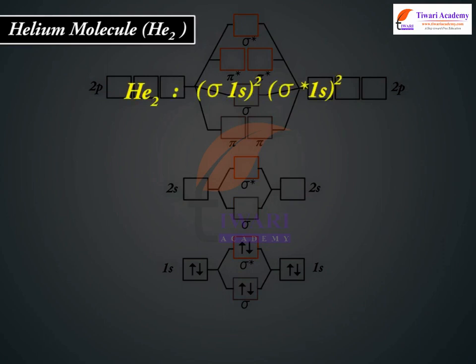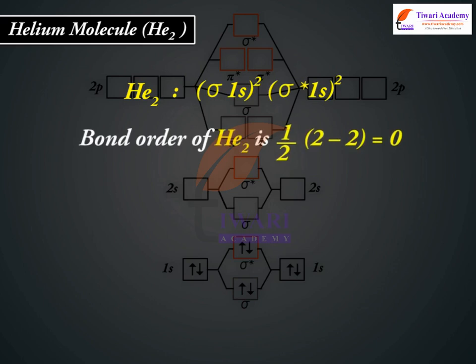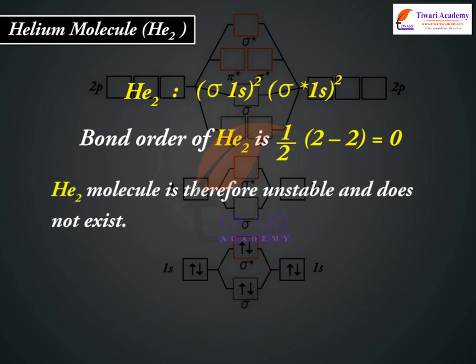He2: sigma 1s2, sigma asterisk 1s2. Bond order of He2 is 1/2(2 minus 2) equals 0. He2 molecule is therefore unstable and does not exist.